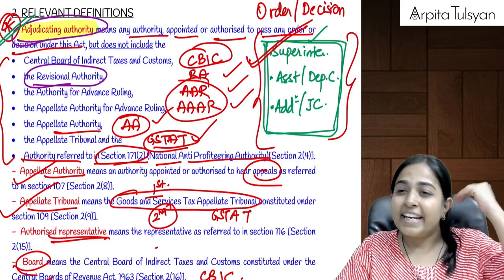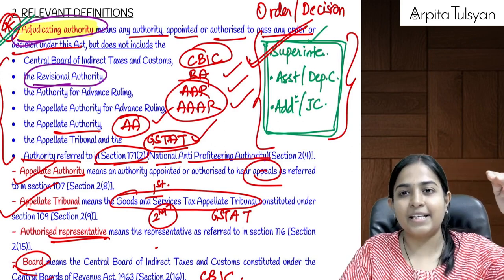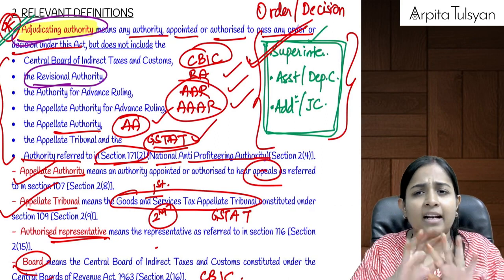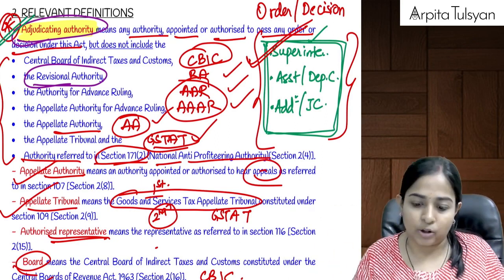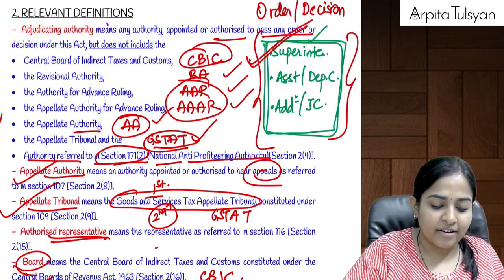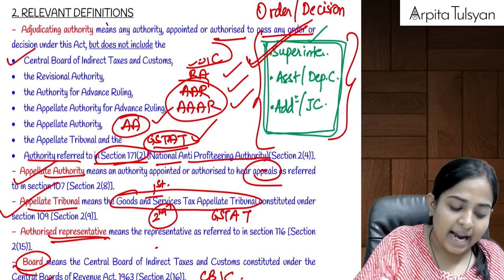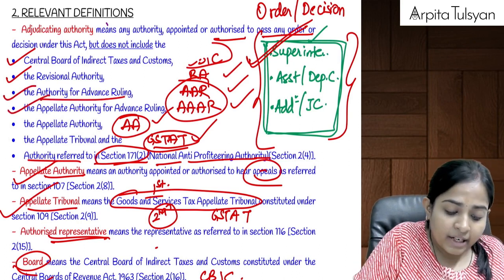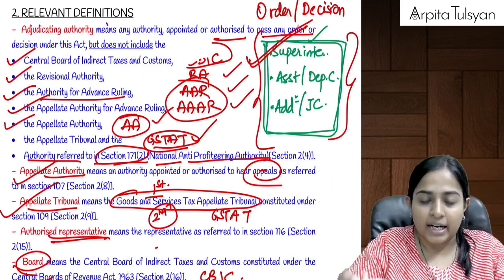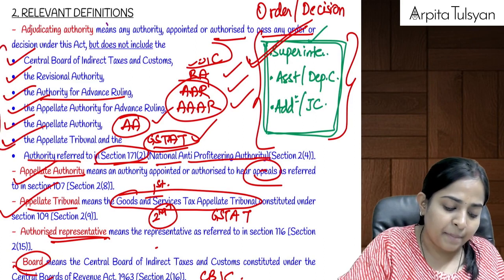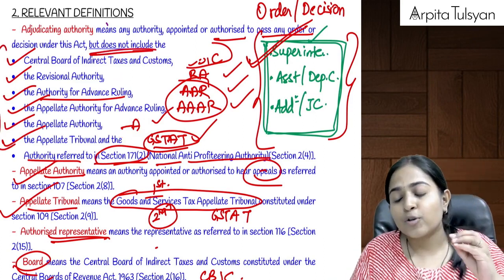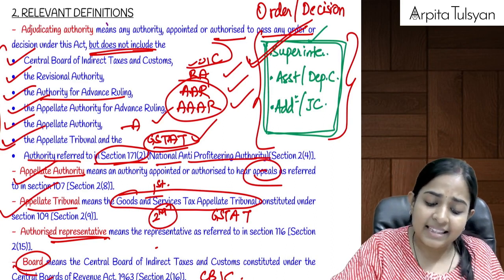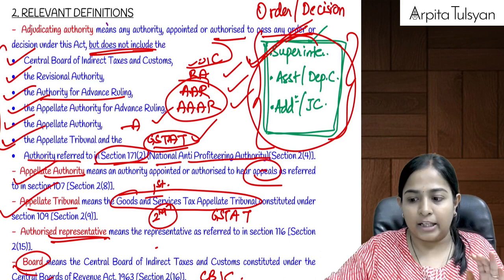Higher-level authorities like the CBIC, advanced ruling authority, revisional authority, appellate authority, or appellate tribunal are not considered adjudicating authorities, as given in the definition. So to simplify: superintendents, assistant/deputy commissioners, additional/joint commissioners are the adjudicating authorities.